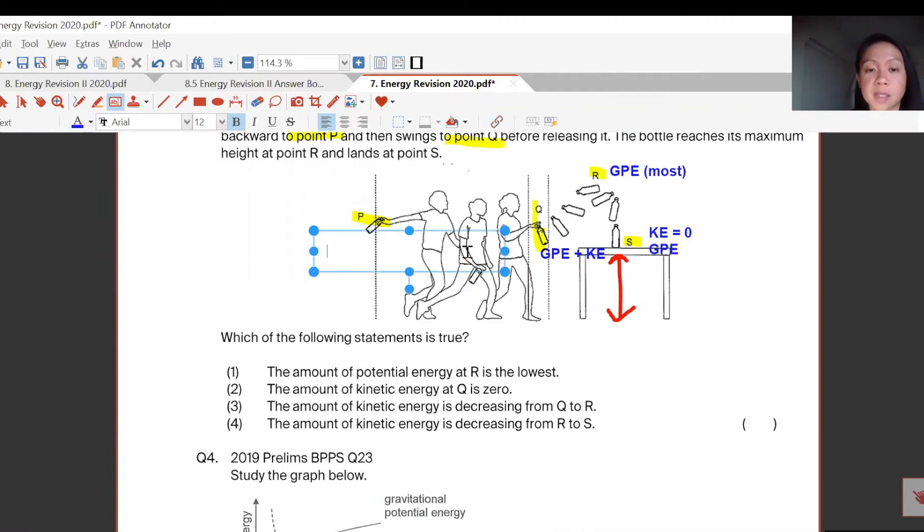At P, same thing, he swings the thing backward. If he swings, that means it's got movement, so there's KE. My K button is broken, so I'm trying to press it very hard. So of course, KE plus your GPE.